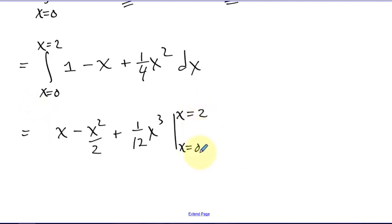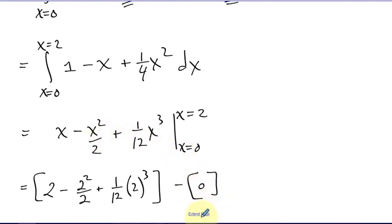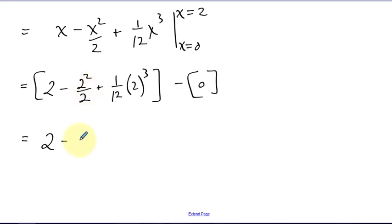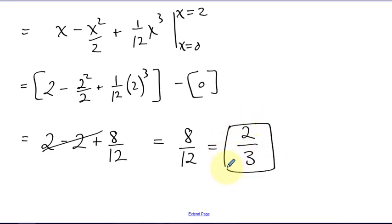Okay, here we have a lower bound of zero and an upper bound of two. So I'm going to plug in two. And then when I plug in zero, every term has an x, so those all go to zero. So this is four over two. This is eight over twelve. Those cancel. Eight over twelve reduces. There's a four that you could cancel. So I get the volume is two thirds.